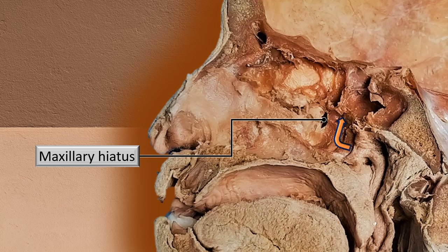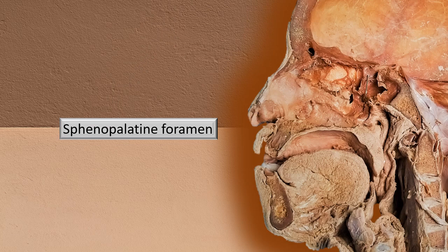Immediately behind and a little below the maxillary sinus, there is the sphenopalatine foramen — a small gap between the sphenoid bone and the palatine bone. On the other side of the sphenopalatine foramen, lateral to the lateral wall, is the pterygopalatine ganglion. This ganglion is an important ganglion of the parasympathetic system; its fibers enter the nasal cavity through this foramen. The sphenopalatine foramen is right behind the maxillary hiatus.